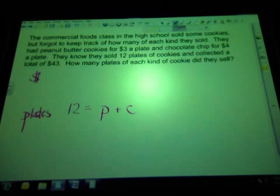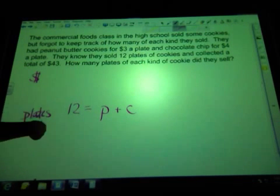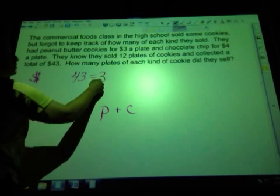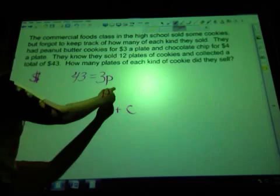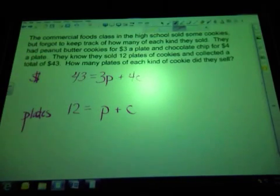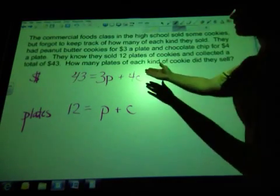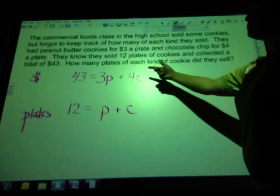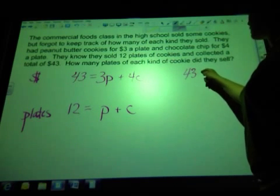On the money, what did they have for their total? Yeah, they had $43, so that's going to be their total. And then they had $3 a plate for peanut butter cookies and $4 a plate for chocolate chip cookies. So with the peanut butter cookies, it was $3 for every plate of peanut butter cookies and $4 for every plate of chocolate chip cookies. So we're going to just now go ahead and solve these. This is better set up for elimination, so I'm going to go with that.